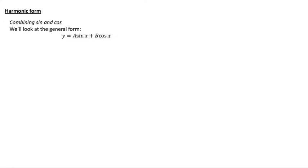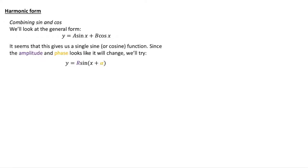Okay, so, combining them. If we look at a general form, if we say that y is equal to something times sine x plus something times cos x, it seems that this gives us a single sine or cosine function. But it does look like the amplitude and the phase are changing. So, what we'll do is we'll say that y is also equal to something, r, times sine of x plus something. So, the plus something, of course, from graph transformations, that shifts that sine function, alpha to the left, in fact, and r magnifies it by stretching it by r in the y direction.